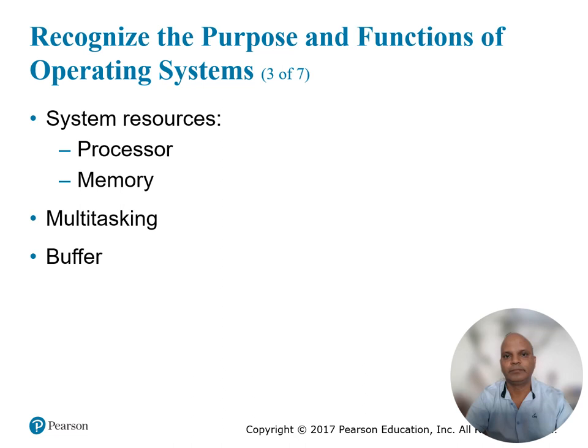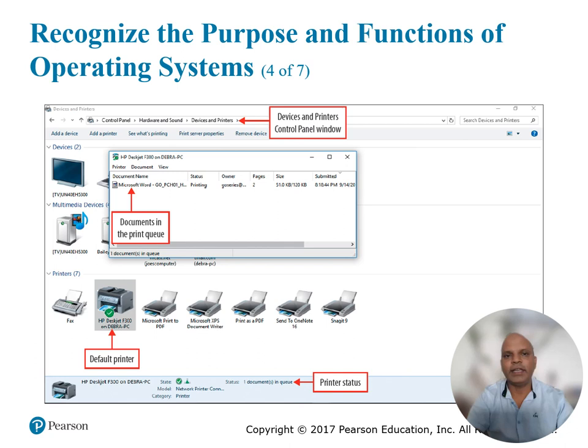Recognizing the purpose and functions of the operating system: you get an idea of how it works by viewing the print buffer after sending multiple documents to the printer. The documents are placed in a buffer, waiting until the spooling program indicates a printer is available. To see the print queue, type 'print' on the Windows start screen, click Settings, then click View Devices and Printers. Click the default printer, then click See What's Printing. As documents are spooled to the printer, the status is reported at the bottom of the window.